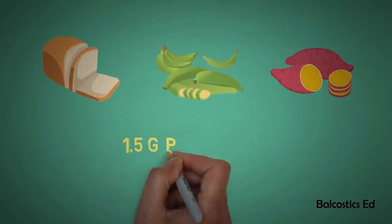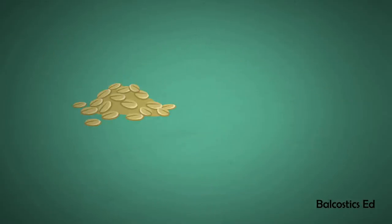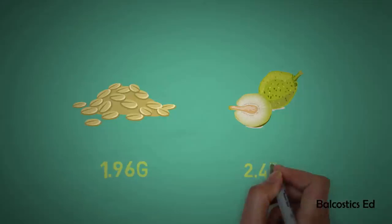Richer still is rolled oats at 1.96 grams, but topping the list—you guessed it—our local breadfruit at 2.45 grams for a serving of two slices. So next time when you reach for the foreign goods on the shelf, don't forget our local products are the best.